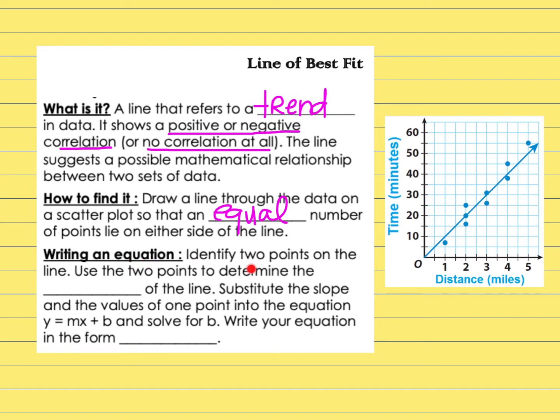Then it says how to write the equation. First, you're going to identify two of the points on the line. So for this one, I would use this point and this point. I'm going to use the points to determine the slope of the line. Once I get my slope, I'm going to substitute in the values for one of the points in the equation. The equation, remember, is always in y equals mx plus b form. And then that's going to help me solve for b, which is my y-intercept. Write your equation in the form. Again, it's already been said, but y equals mx plus b.